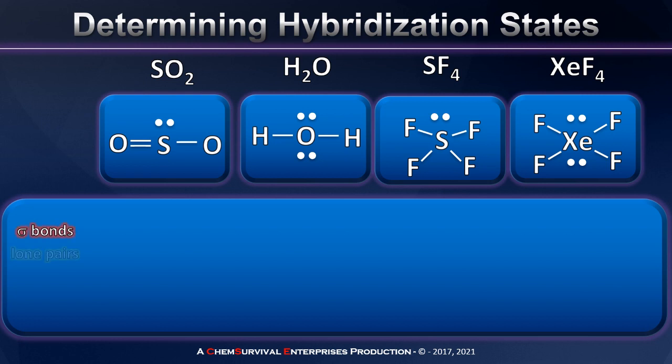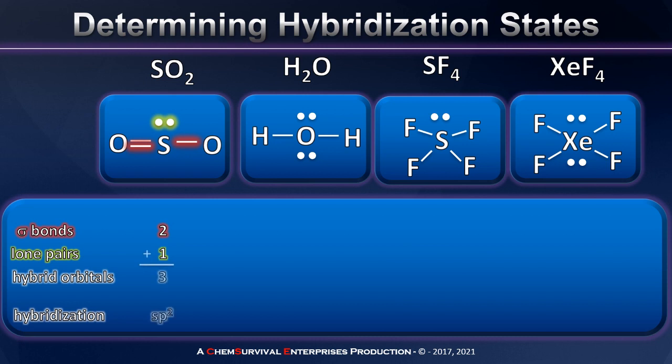Once again, I'm going to count sigma bonds and lone pairs and use that to determine the hybridization state of the central atom. Sulfur dioxide, for example, contains two sigma bonds and just one lone pair. This means I have to have three hybrid orbitals about that central sulfur atom, and the recipe for three hybrid orbitals is SP2.